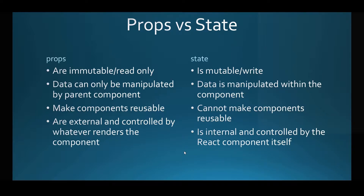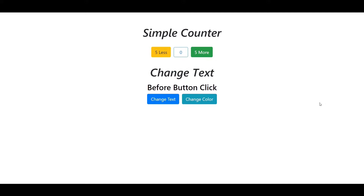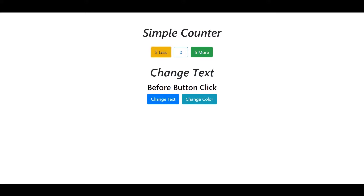So in this video, we will build a simple application. Let me show you a preview. This application is going to be a simple counter and a changing text application. The counter starts from zero as the initial value. We can add five or subtract five from the initial value, and also down here we can change the text. All this is possible using the state.